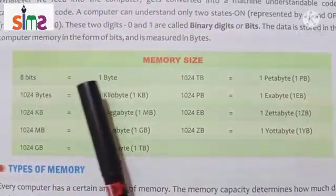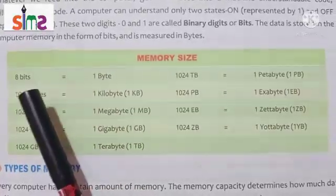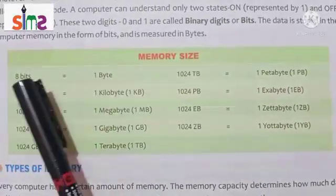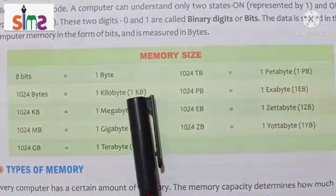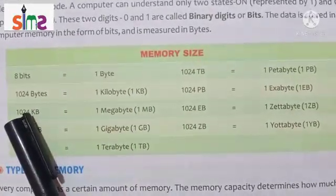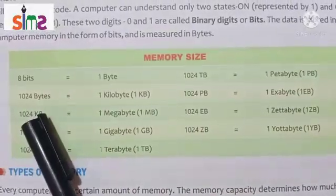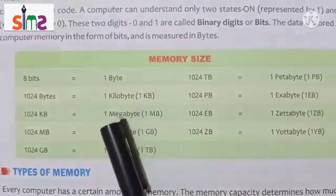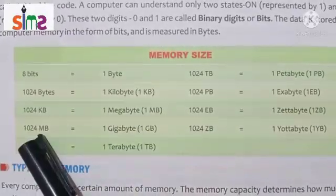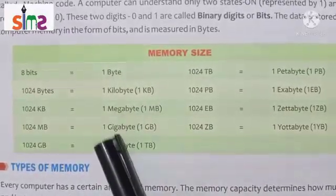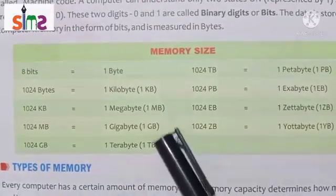8 bits equals 1 byte. 1024 bytes equals 1 kilobyte. 1024 kilobytes equals 1 megabyte. 1024 megabytes equals 1 gigabyte. 1024 gigabytes equals 1 terabyte.